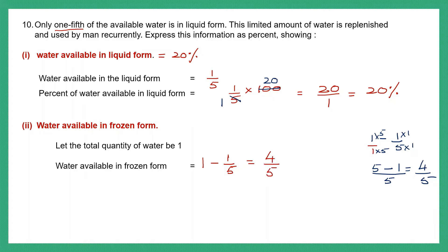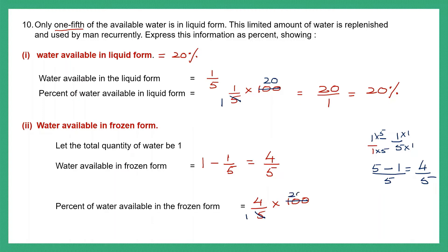Now we need to find the percent of water available in the frozen form, which is 4 by 5 into 100. Let's cancel: 5 1s are 5, 5 2s are 10, 5 into 20 is 100. Now let's multiply 4 into 20, which is 80. Denominator is 1, so 80 by 1 is 80. The percent of water available in the frozen form is 80%.